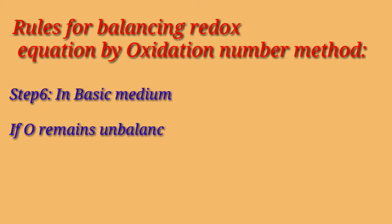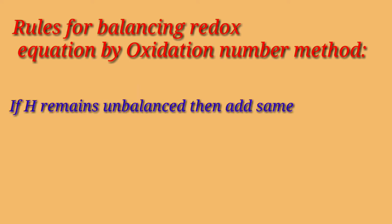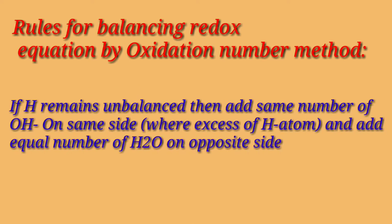In case of basic medium: if oxygen remains unbalanced, add the same number of water molecules on the side where there is an excess of oxygen atoms, and add double the number of hydroxide ions on the other side. If hydrogen remains unbalanced, add the same number of hydroxide ions on the side where there is an excess of hydrogen atoms.